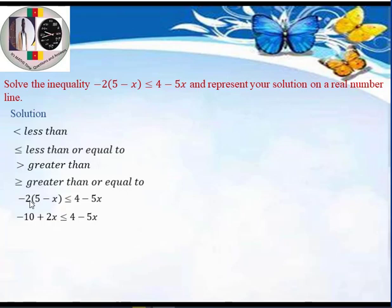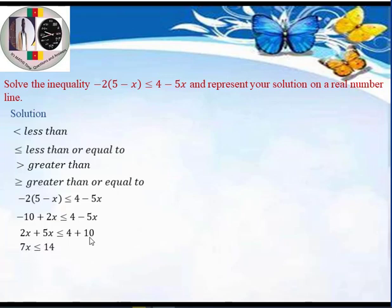The next step is to bring like terms together. We take all terms with x to the left-hand side and all terms without x to the right-hand side. Bringing minus 5x to the left gives plus 5x, and bringing minus 10 to the right gives plus 10. So we have 2x plus 5x less than or equal to 4 plus 10, which gives 7x less than or equal to 14.